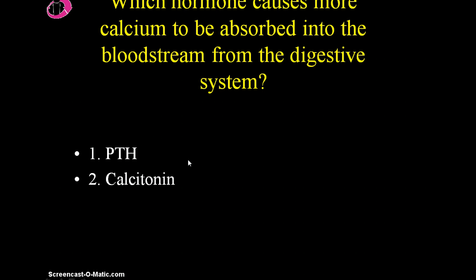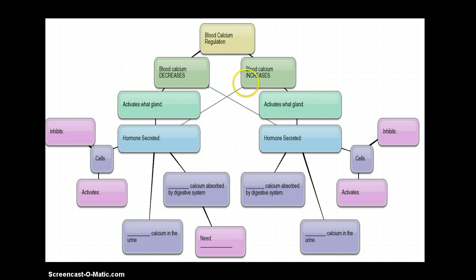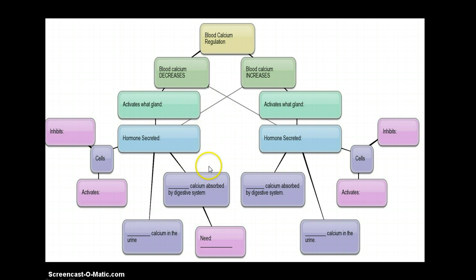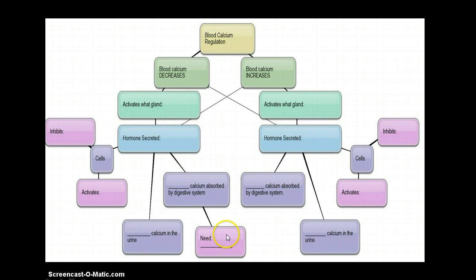This has been a review of how calcium is regulated by two hormones. You have this in your PowerPoint and as a handout. Make sure you can go through it step by step and understand the influence of the hormones, what glands they come from, and their effects on bone cells, the urinary system, and the digestive system.